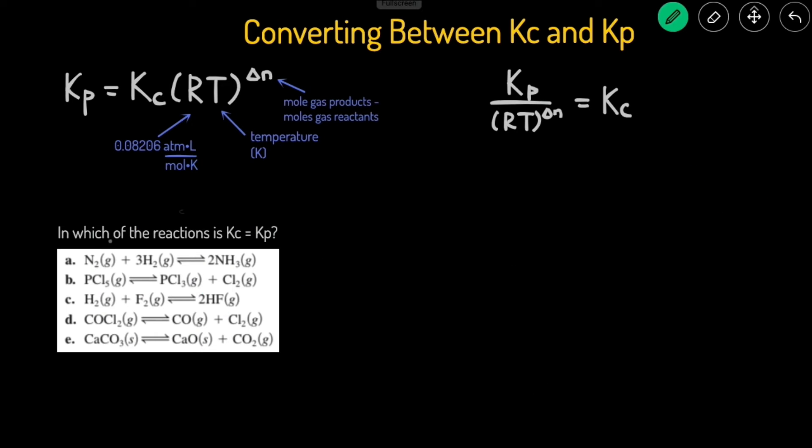This next problem reads, in which of the following reactions is the Kc equal to Kp? Kc and Kp are going to be equal when the change in moles of gas is 0, when there's an equal number of moles of gas on both sides. Because if the delta N is 0, then anything raised to 0 power is just 1, so this entire thing becomes 1, and Kp equals to Kc. So why don't we go through this and just calculate the delta N, and if delta N is equal to 0, then we know that the Kc will equal Kp.